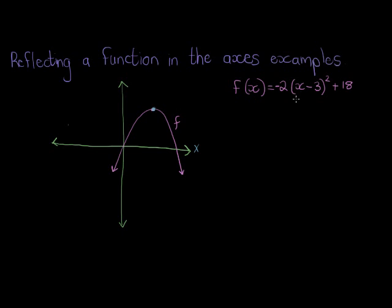What are the coordinates of this point? Well, it used to be 3 comma 18, and that is now going to be reflected in the x-axis. It goes all the way to the other side, and now it is still 3 but this time it is negative 18.